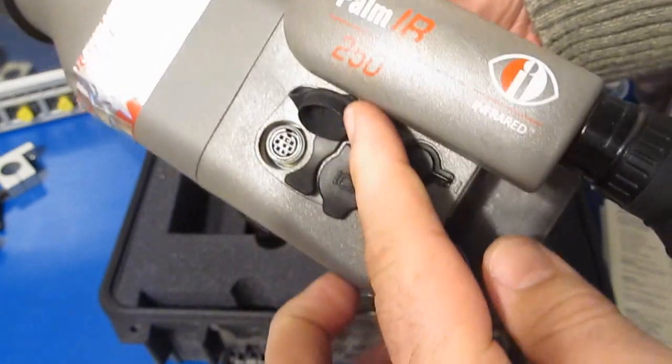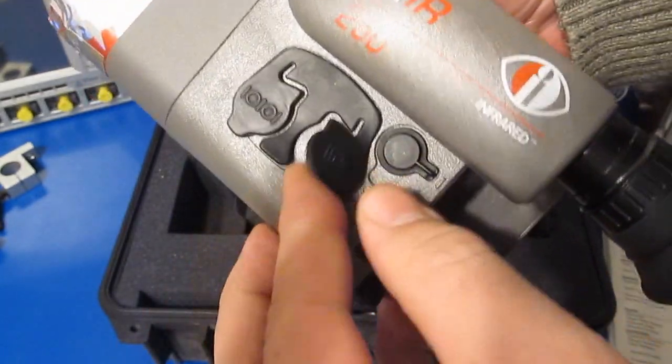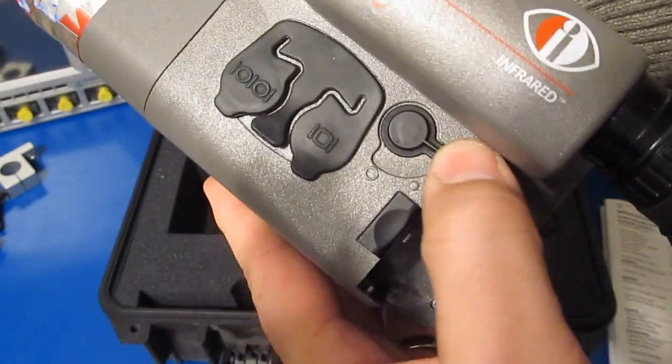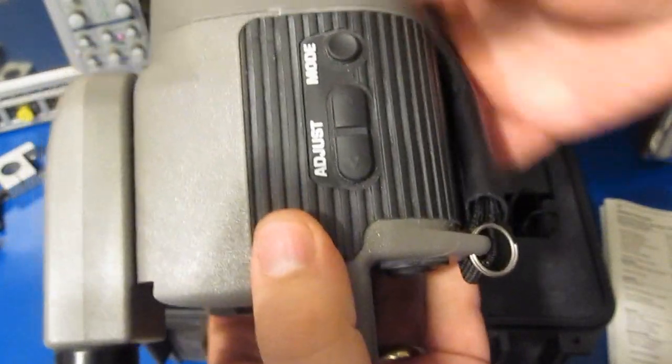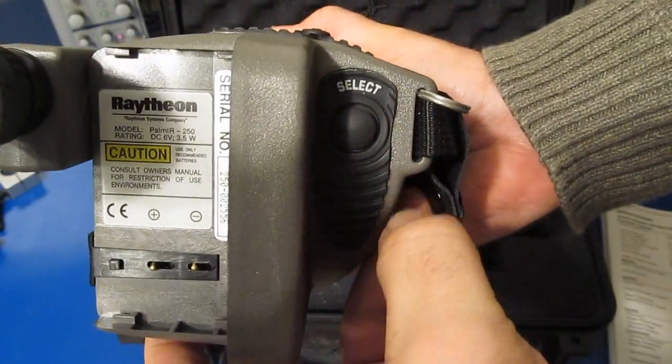It has a serial port connection, that's this. And this is a composite video output. This is your on-off switch. This is your adjustment, the mode. Then you have a select switch in the back.